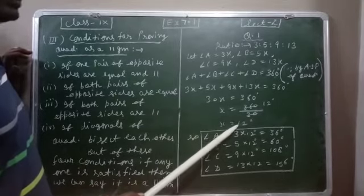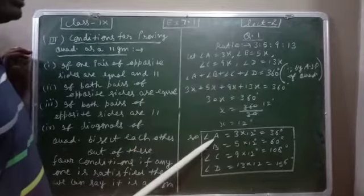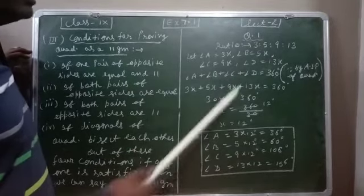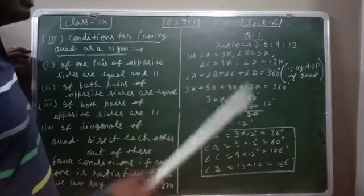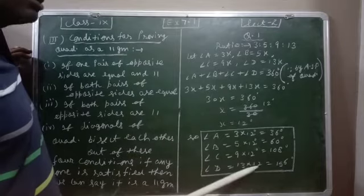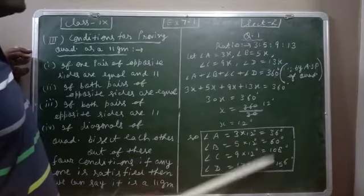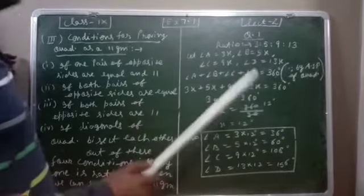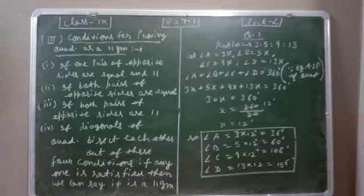Adding 3x + 5x + 9x + 13x we get 30x. So 30x = 360°, giving x = 12. Therefore angle A = 3 × 12 = 36°, angle B = 5 × 12 = 60°, angle C = 9 × 12 = 108°, and angle D = 13 × 12 = 156°. These are the values of all four angles.